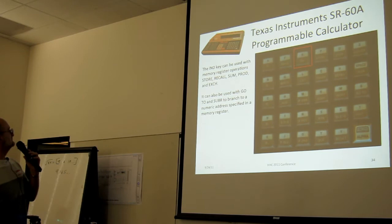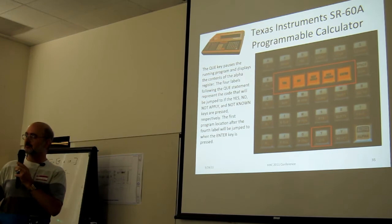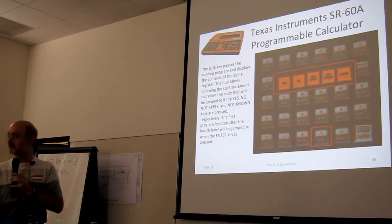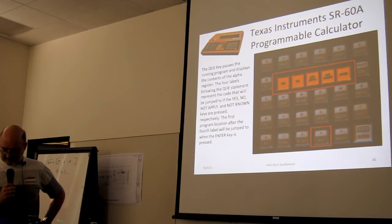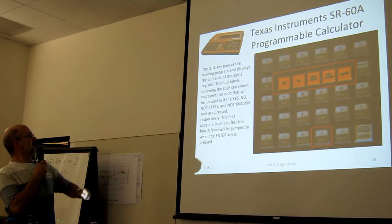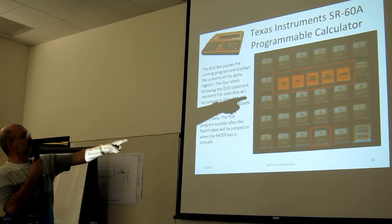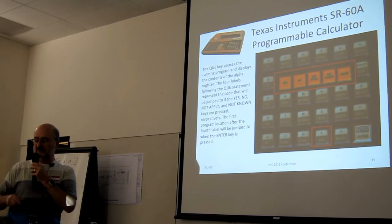Here's where we get into the prompting part. There's a key at the bottom of the right keyboard labeled QUE for question. And what that does is halt the calculator program and display whatever's in the alpha register. And then, right after you press that question key, you put four labels. And it will jump to the first label when you press yes, the second label when you press no, the third when you press not apply, the fourth when you press not known, and continue after that if you press enter. So with a little upfront work it was very easy to write a program that a non-technical user could use. Their classic example was the time value of money program. It would prompt for the things you'd say do you have this, yes, enter it, oh I don't know this one.